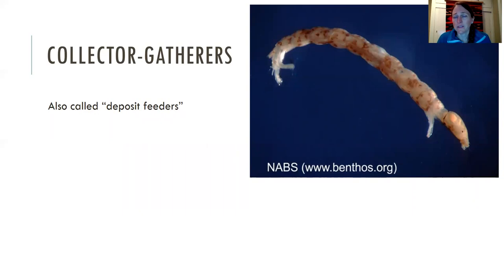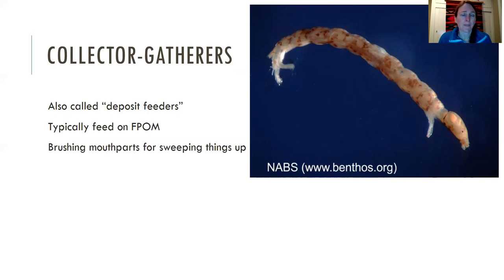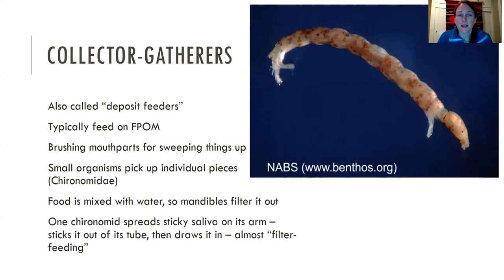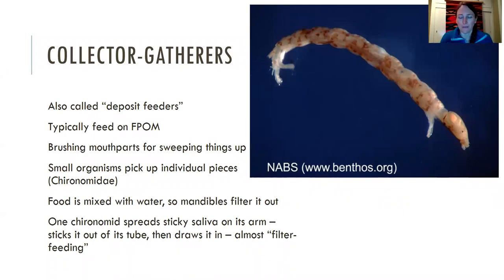Moving on to the collectors. You can either be a collector gatherer, which is an organism that wanders around and eats things — also called deposit feeders. They typically feed on fine particulate organic matter (FPOM) and often have little brushing mouth parts to help sweep things up. A small organism like this chironomid midge might just wander around and pick up little things to eat. The food is often mixed with water, so mandibles help filter out the food part. Some chironomids can spread sticky saliva on their pro-leg, stick it out into the water column, stuff gets stuck to it, and then they bring it back in and wipe it off.